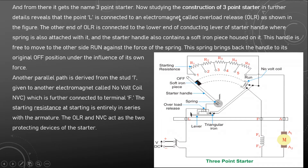Studying the construction in further detail reveals that point L is connected to an electromagnet called the overload release (OLR). The other end of the OLR is connected to the lower end of the conducting lever of the starter handle. A spring is also attached to this conducting lever.